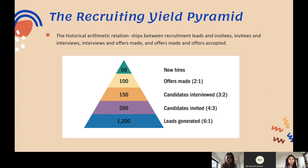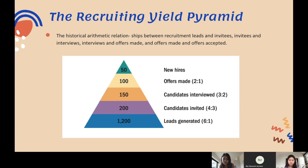Here is the recruiting yield pyramid, which shows the historical arithmetic relationship between recruitment leads, invitees, interviews, offers made, and offers accepted. The pyramid shows that the ratio of offers made to actual new hires is 2 to 1. The ratio of candidates interviewed to offers made is 3 to 1. The ratio of candidates invited for interviews to candidates interviewed is about 4 to 3. Finally, of 6 leads from all recruiting sources, the firm typically invites only one applicant for an interview — a 6 to 1 ratio. Therefore, the firm must generate about 1,200 leads to invite 200 viable candidates, of which it interviews about 150.